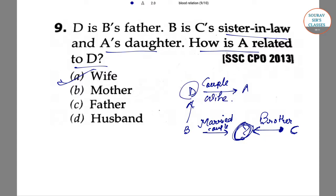It is clear that A is the wife of D. The right answer of this question is wife.